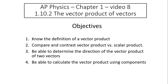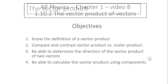Hi, this is Mrs. LaBarbara. This is AP Physics Chapter 1, Video 8. Today's topic is the Vector Product of Vectors. The objectives are to know the definition of a vector product, to compare and contrast vector product versus scalar product, be able to determine the direction of the vector product of two vectors, and be able to calculate the vector product using components.